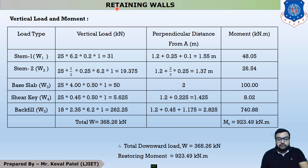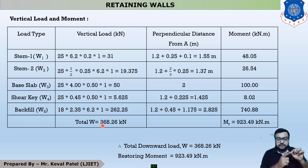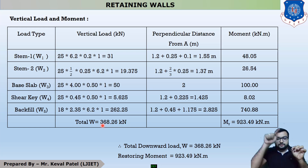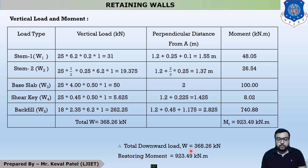After that, we calculated our summation of W, which is sigma W = 368.26 kN, and the moment due to vertical force. Your left corner is the reference point, and whenever your vertical force is acting downward, all the moments act as clockwise moments. The value of total downward force, summation of W, is 368.26 kN, and the moment due to vertical force is 923.49 kN·m.